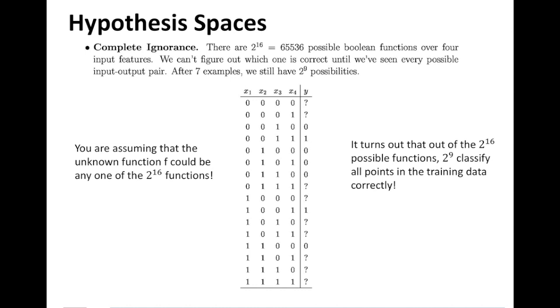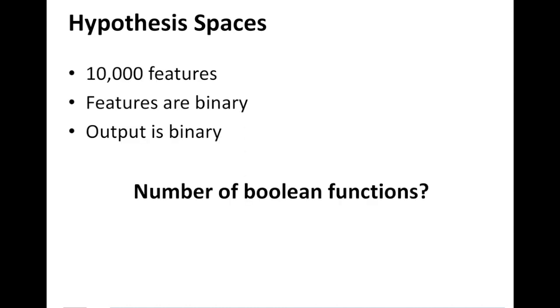So now for 10,000 features, even if features are binary and output is binary, we have 2 raised to 2 raised to 10,000. That is a very big number. You cannot possibly look at so many functions, even with high-performance computing, all these advanced improvements we have in computing these days. Even then it's a big number.